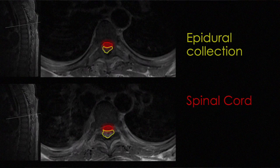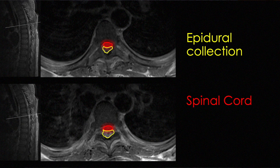This is the axial view of the same sequence. You can see the epidural collection, which is dorsal to the spinal cord, highlighted in yellow, and you can see that it is causing significant mass effect on the spinal cord, highlighted in red.